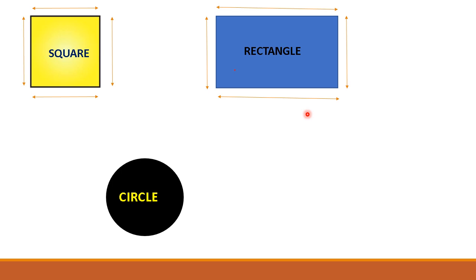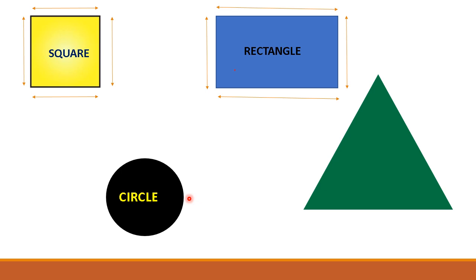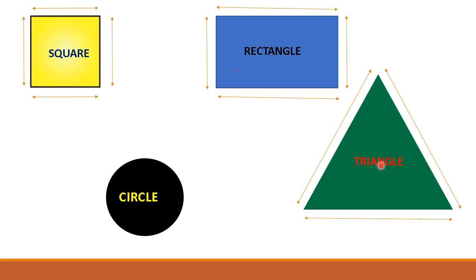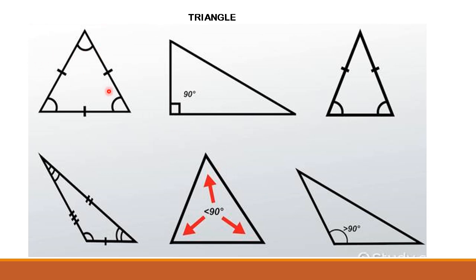It is a triangle. It has three sides: 1, 2, 3. And it has 3 corners: 1, 2, 3. These sides can be equal or unequal. All the sides can be equal or unequal.